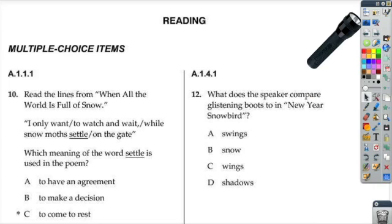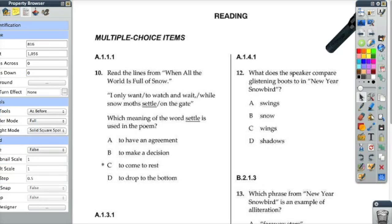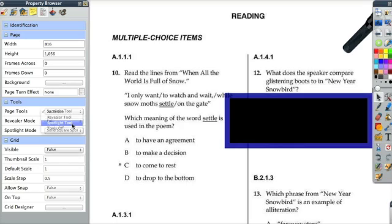You can also set this up in your preferences so that it automatically happens when you first go to this page. You're going to click on Property Browser and you're going to click on Tools and right here you're going to select Spotlight tool. Now this will automatically pop up in this page when you turn to this page and you can choose what type you'd like it to be.